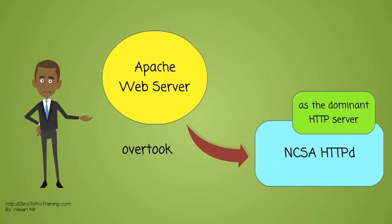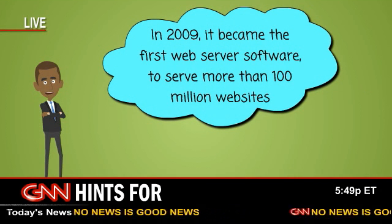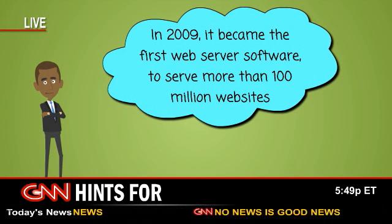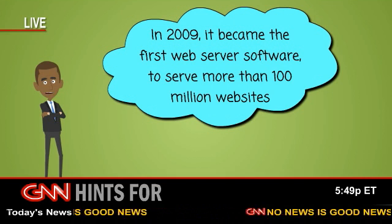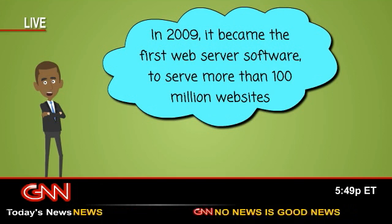Apache quickly overtook NCSA HTTPD as the dominant HTTP server. It has remained the most popular HTTP server in use since April 1996. In 2009, it became the first web server software to serve more than 100 million websites.